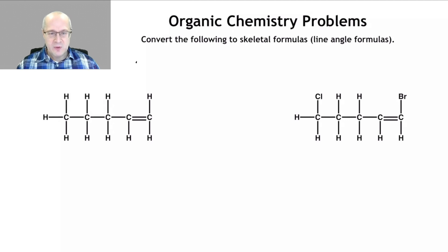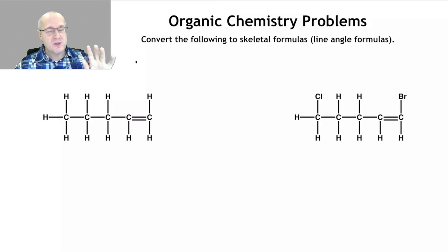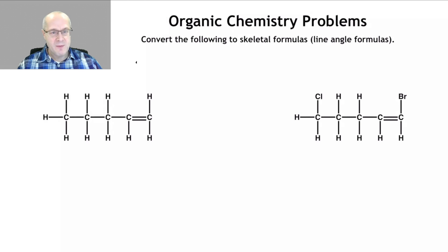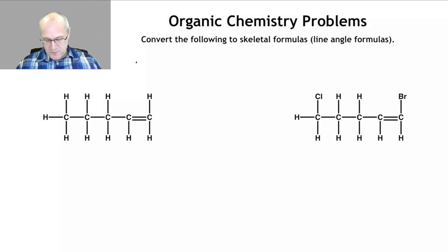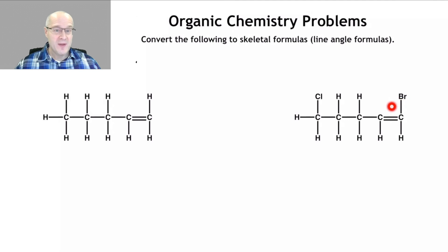Remember, if you've watched my previous video that I'll link to somewhere over here, I showed you how to do line angle formulas on simple alkane-like structures — simple carbon-carbon single bonds with nothing else going on. These are a little more complicated in that they have double bonds, and this one over here has non-hydrogen and non-carbon atoms, so we have to deal with that as well. Don't worry, I'll show you how.